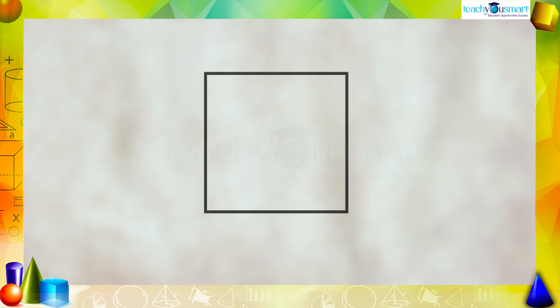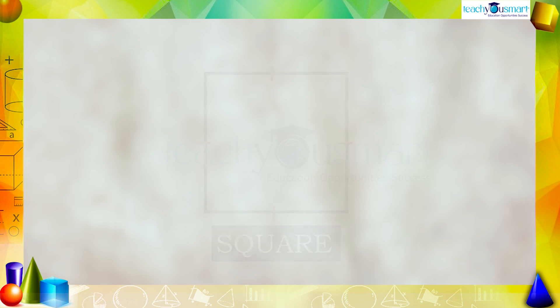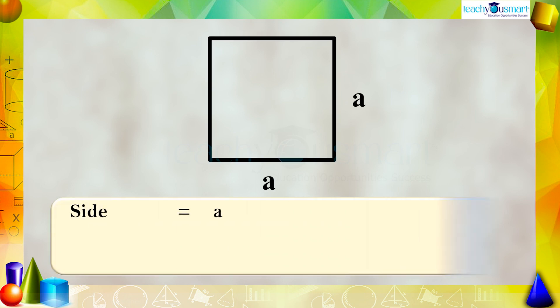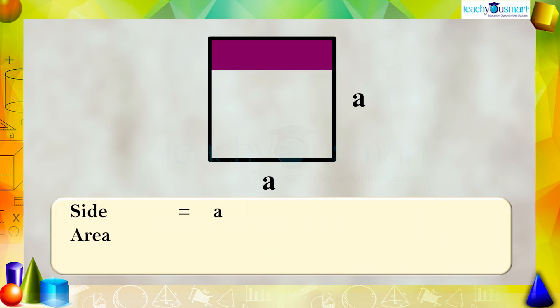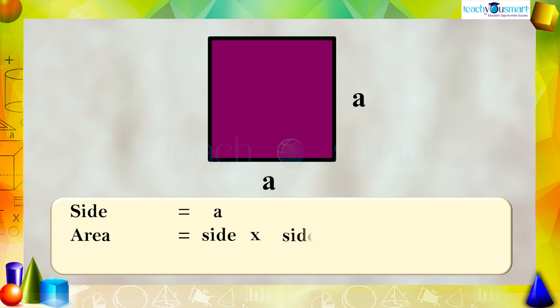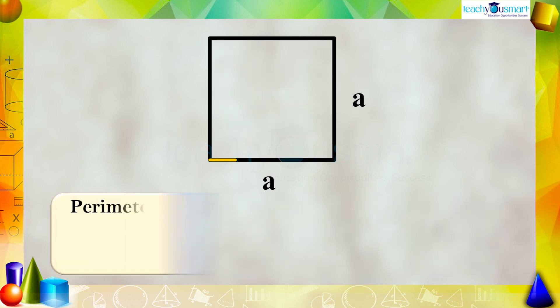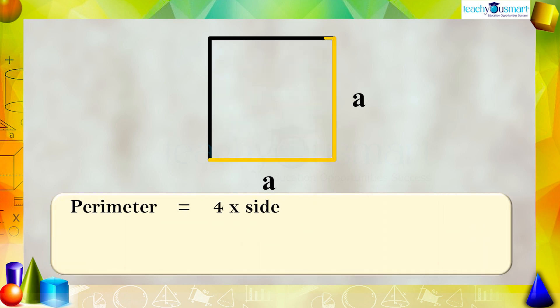Here is a rectangle with all sides equal — yes, it is a square. If we take the side of the square as a, then its area is side multiplied by side, that is area = a × a = a². And the perimeter is 4 multiplied by the side, equals 4a.